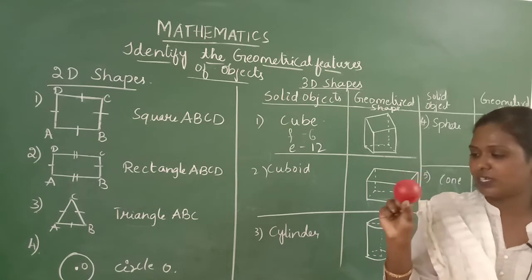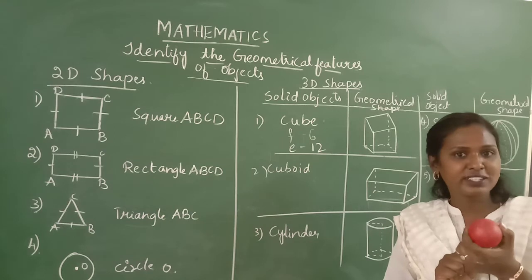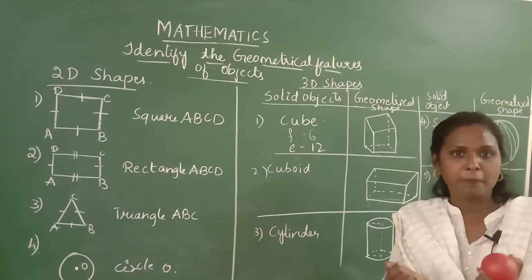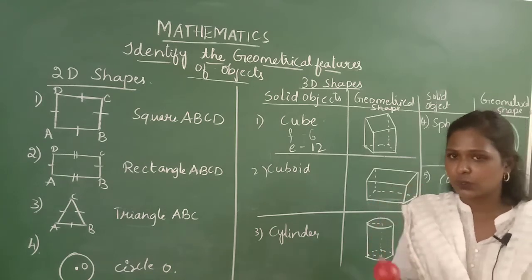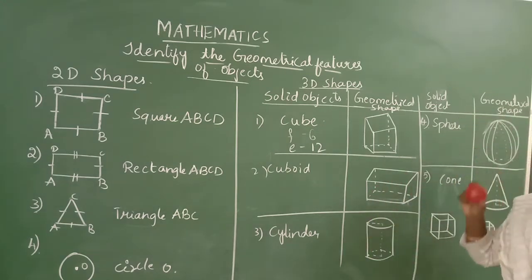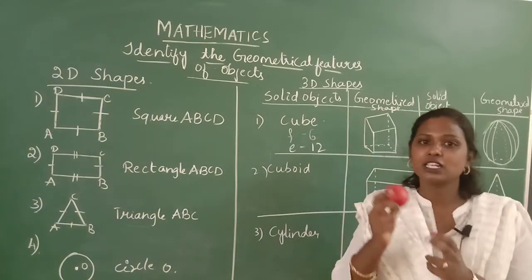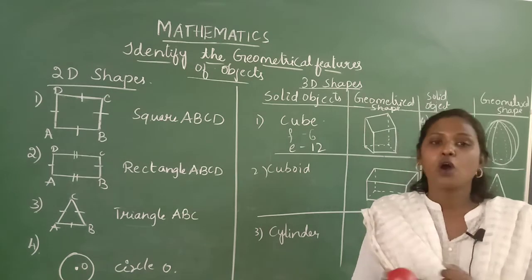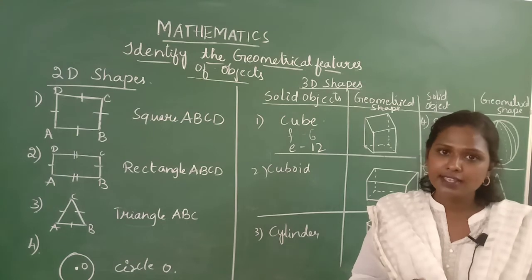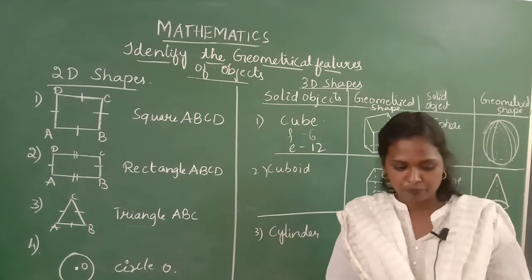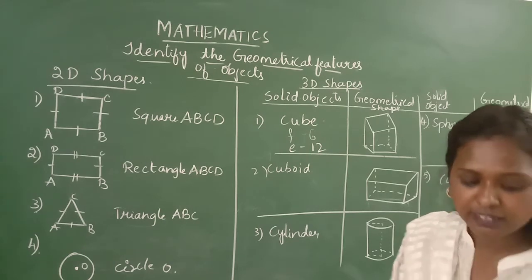Let us move to another example. Children, what do you know about this one? What comes by seeing this object to your mind? Your play ball, right? This is the shape of a sphere. I have drawn the geometrical shape of a sphere. Sphere is also a closed loop. It does not have any corners or any vertex. It has a curved edge.